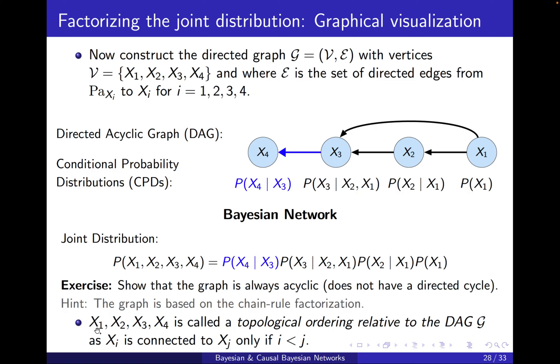A side note which sometimes happens in the literature: we have x1 to x4. If we write them down like this, x1, x2, x3, x4, this is called the topological ordering relative to the DAG G. If this is my DAG G, you see that for each index,